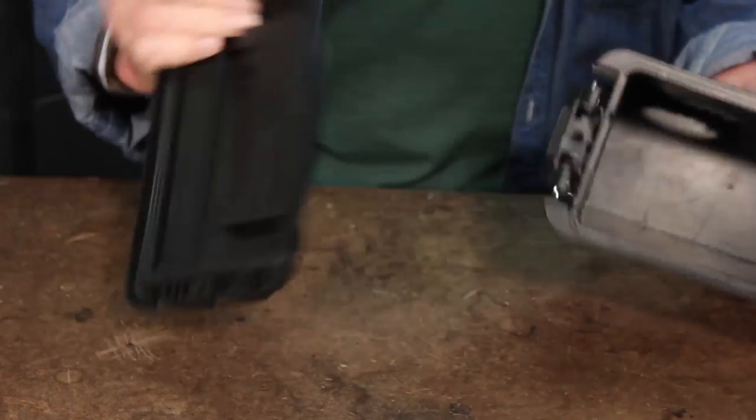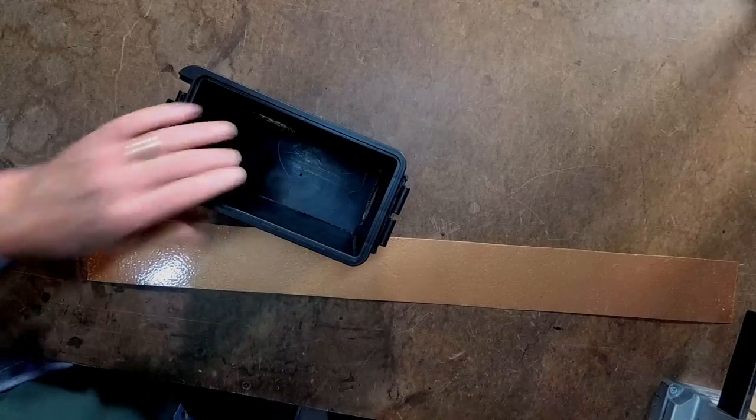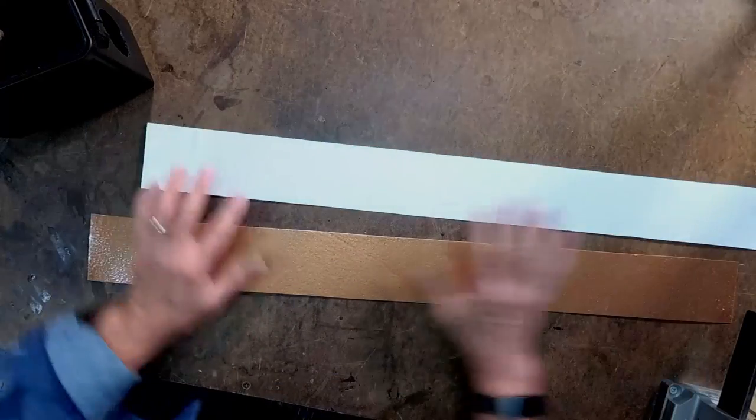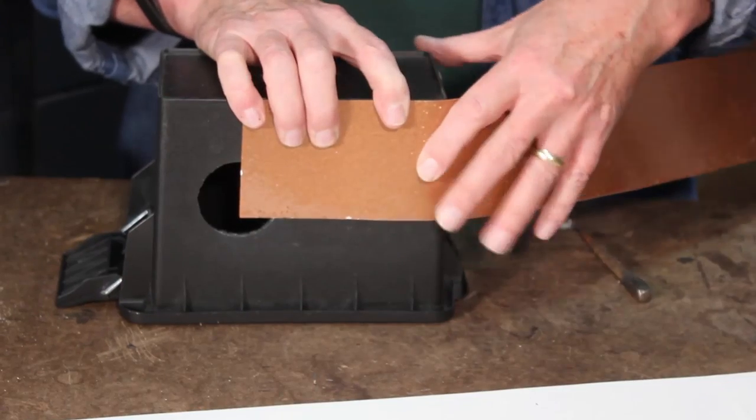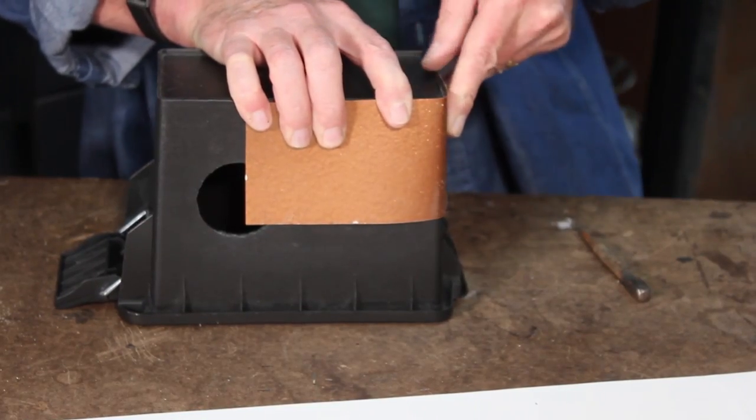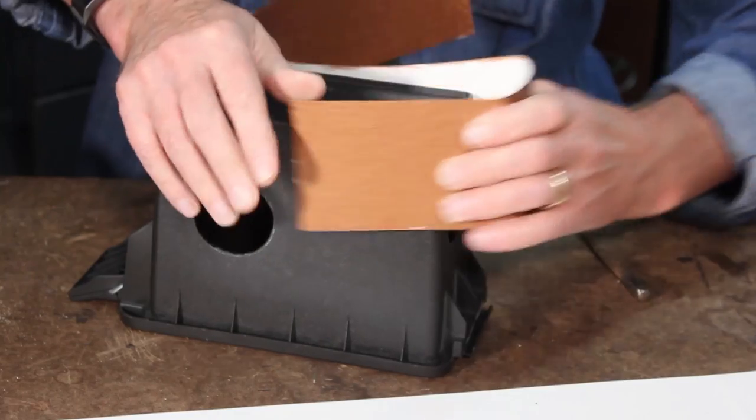Once I have the holes cut, I'm going to remove the lid. It just pops off. And I'm going to use some aluminum siding that I'd picked up for another project. This copper colored is some aluminum that I pre-painted, and it's going to work just fine.